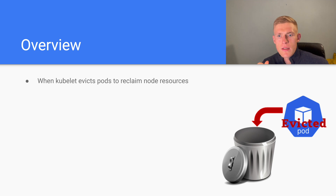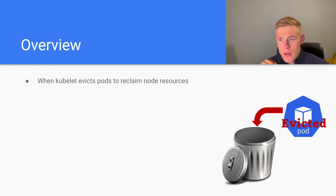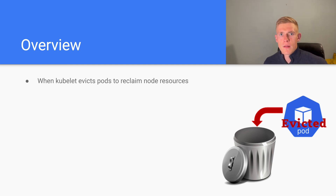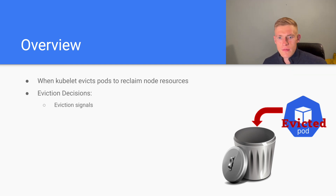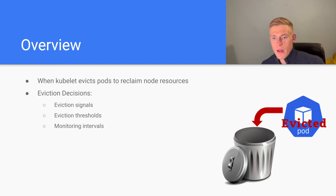We don't consider CPU when discussing node pressure eviction because CPU is defined as a compressible resource. We won't get into the details of what that means in this video, but you can research that yourself. So how do we make our eviction decisions? They are defined by eviction signals, eviction thresholds, and monitoring intervals. Those concepts combined dictate how we actually make our decisions.